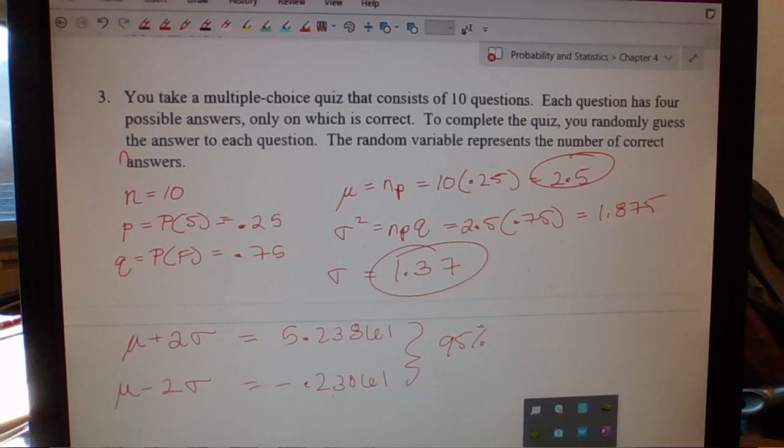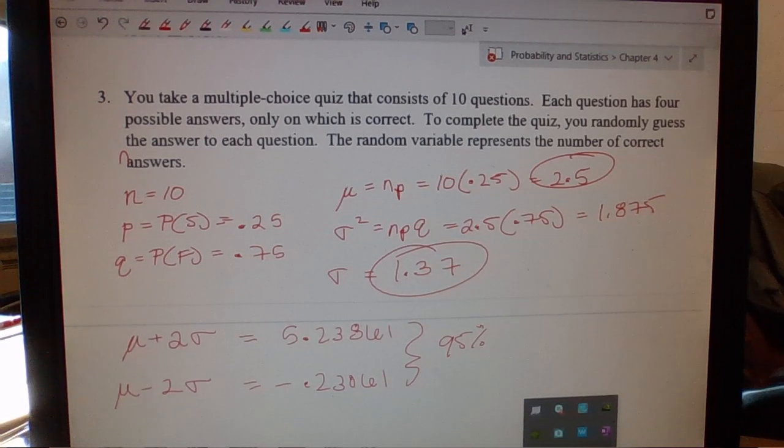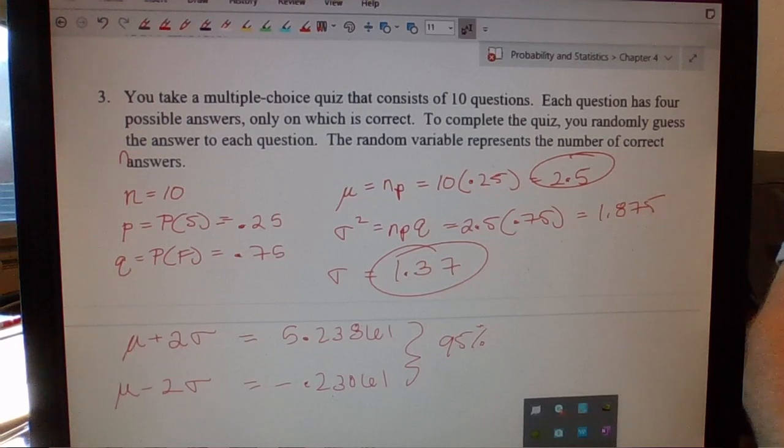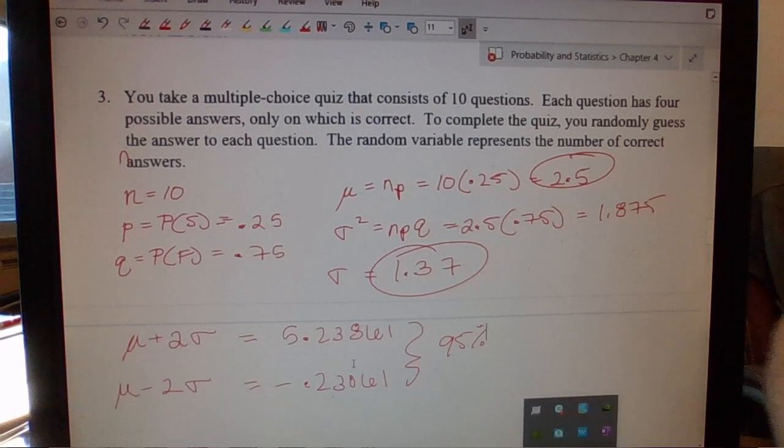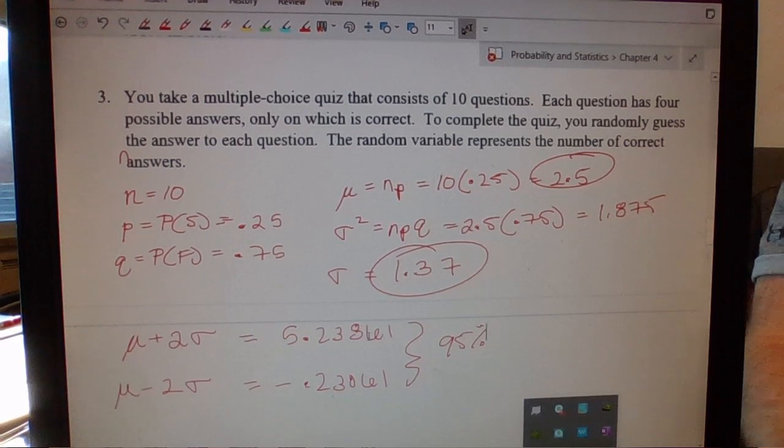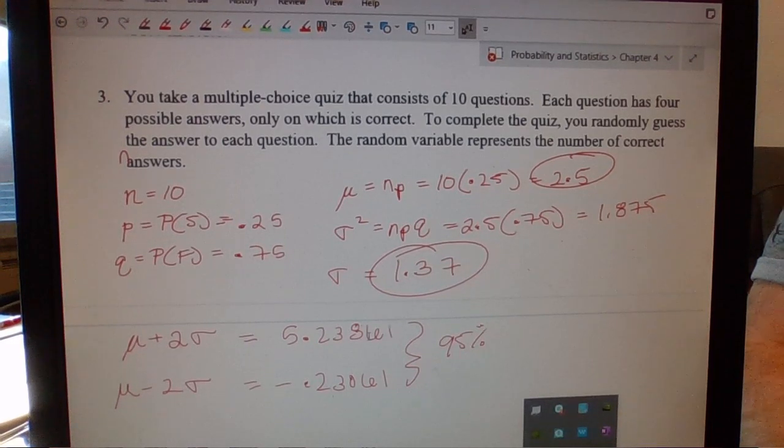Now, obviously you can't get negative answers correct, or negative questions correct. You can't get 0.2 if it's multiple choice. But essentially what we would argue here is that 0 to 5 would be usual values to get correct on that quiz by guessing. That would happen 95% of the time. 95% of our data falls between two standard deviations of the mean.